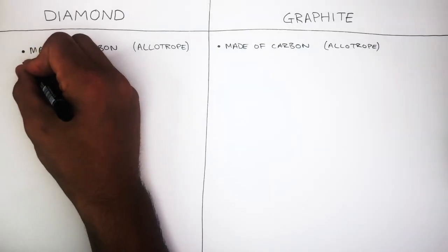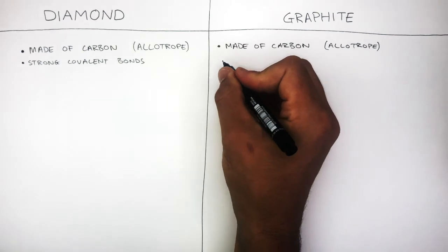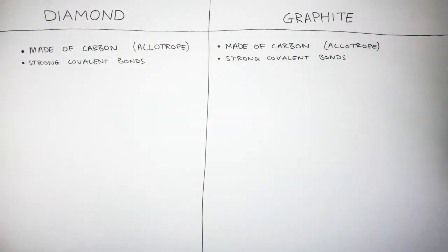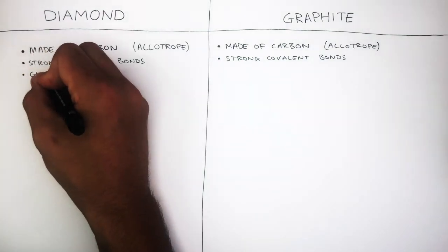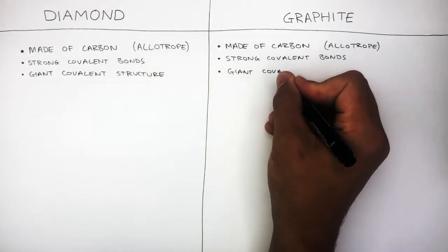Diamond has strong covalent bonds between the carbon atoms, and graphite also has strong covalent bonds between the carbon atoms. Diamond has a giant covalent structure and graphite also has a giant covalent structure.